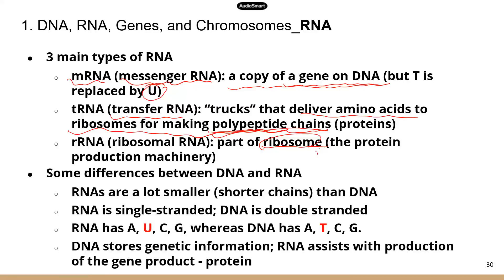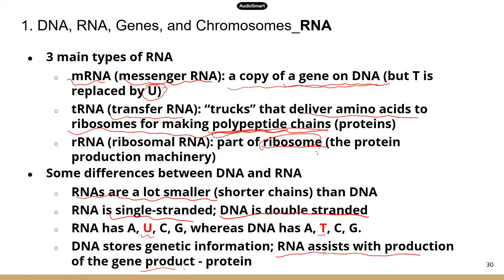There are a few differences between DNA and RNA. RNA is smaller in size compared to DNA. RNA is single-stranded, while DNA is double-stranded. mRNA is just a copy of one of the two DNA strands. In terms of nucleotides, whenever you see a sequence with U, you know it has to be an RNA sequence; if you see T, it's a DNA sequence. In terms of function, DNA stores genetic information, while RNA assists with production of gene products — basically proteins. All three types of RNA are involved in protein production, which is essentially gene expression.